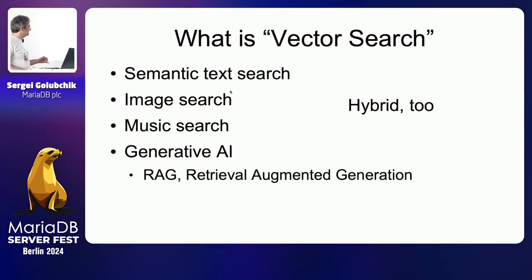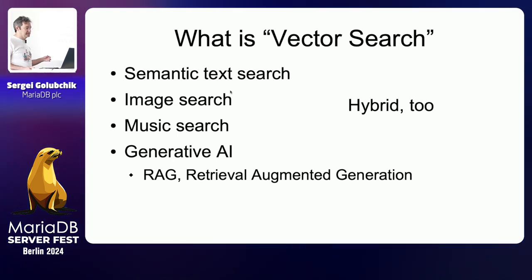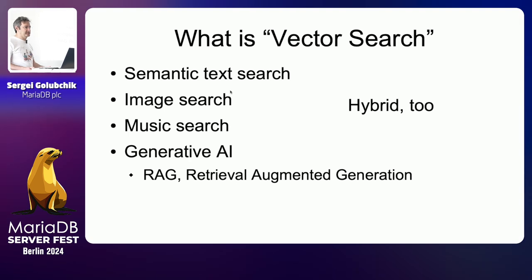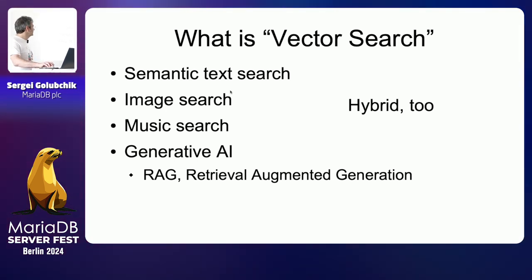Vector search is also the technology behind generative AI's retrieval augmented generation — that's when you use AI to generate text, images, or music, and it's retrieval augmented, meaning it's based on the context you provide, which is found through the search query. All of these features use vector search.